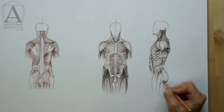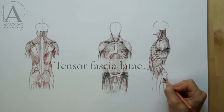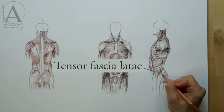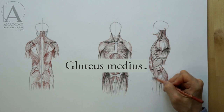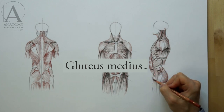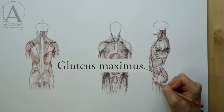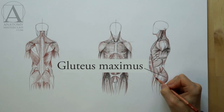Remember, the gluteal region consists of three muscles. Here is a good view of the front portion of this group. The medial portion, previously mentioned, is responsible for raising the leg sideways. The gluteus maximus muscle, or the buttox muscle, is indicated here.